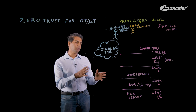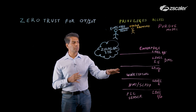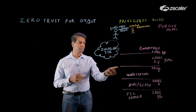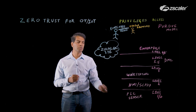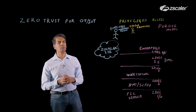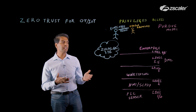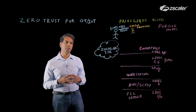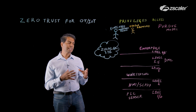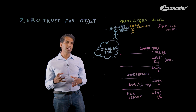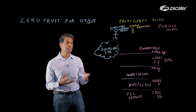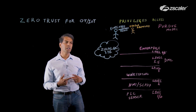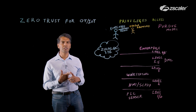So what's happening here? In the Purdue model, there's really no separation. This is a flat network from level three down to level zero or one — it's a flat network. It's usually what we call a control network, meaning your devices are communicating with other systems, whether it's workstations or other devices, over unencrypted channels.